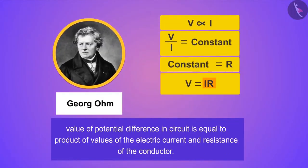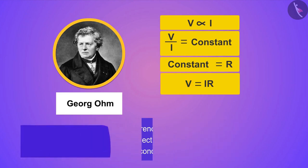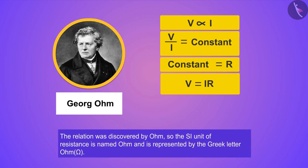According to Ohm's law, it can be said that the value of potential difference in circuit is equal to the product of values of the electric current and resistance of the conductor. The relation was discovered by Ohm, so the SI unit of resistance is named as Ohm and is represented by the Greek letter Omega.